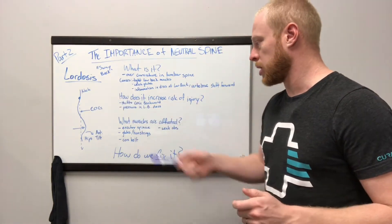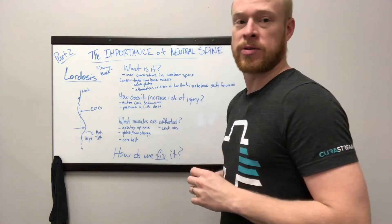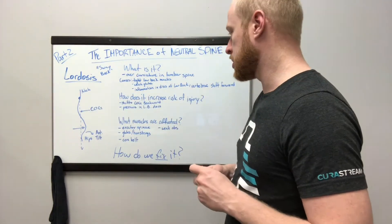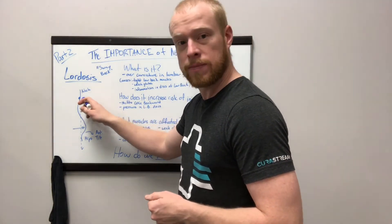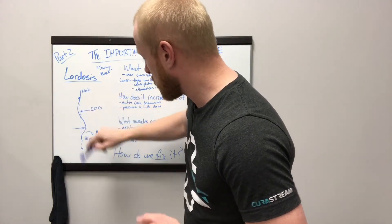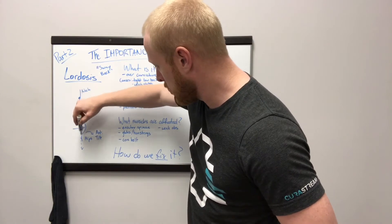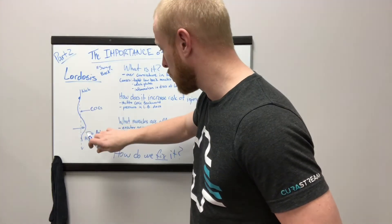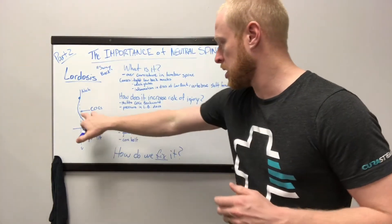How does it increase your risk of injury? Well, it shifts the center of gravity backward. Now when we were talking about kyphosis, it shifted the center of gravity forward with loading the spine. Now we're shifting it behind the center of gravity, and this increases pressure in the low back discs. When we look at our demonstration here, you can see we're doing a barbell squat. With that center of gravity line coming through, lordosis pushes the low back curvature inward, causing an anterior rotation of the hips, which increases the curvature in the low back and therefore puts the center of gravity behind the spine.